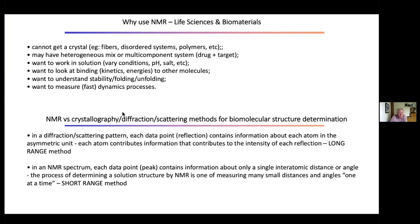You've been listening to diffraction and scattering methods already in this course. Each data point in any diffraction pattern contains information about each atom within the asymmetric unit — so diffraction and scattering methods are long-range methods. Whereas in NMR, each data point contains information only about one single atomic distance or angle process. NMR is a short-range method, very good for short-range interactions, typically over the 1 to 10 ångström or 1 nanometer length scale.